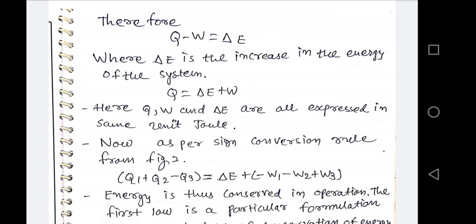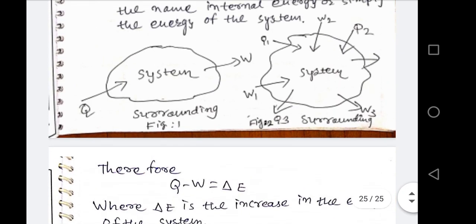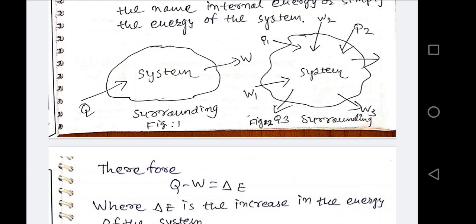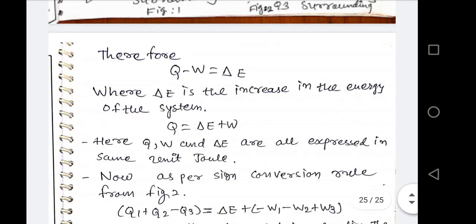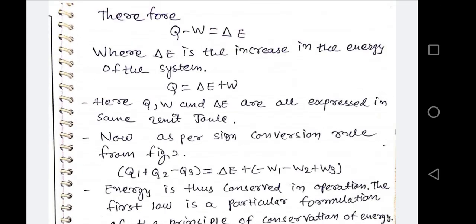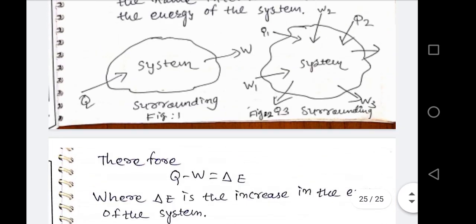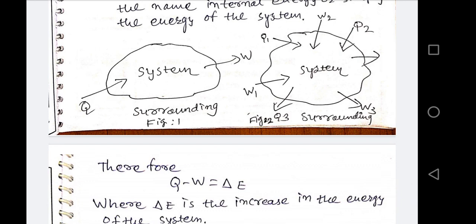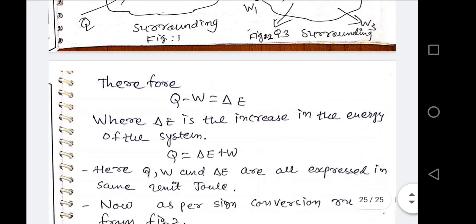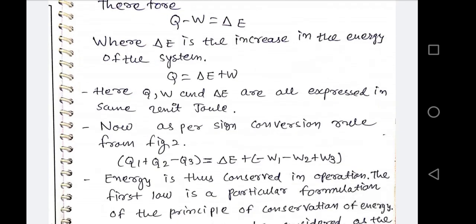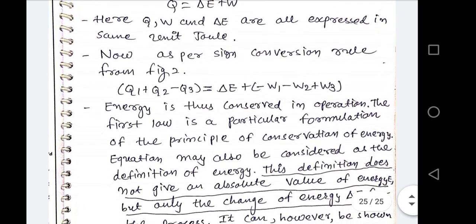As per the sign convention, if Q₁ and Q₂ are entering the system and Q₃ is leaving, then net heat = Q₁ + Q₂ − Q₃. If W₁ and W₂ are added to the system (negative) and W₃ is taken outside (positive), then net work = −W₁ − W₂ + W₃. So the first law for a closed system with change of state is: (Q₁ + Q₂ − Q₃) = ΔE + (−W₁ − W₂ + W₃), confirming energy is conserved.